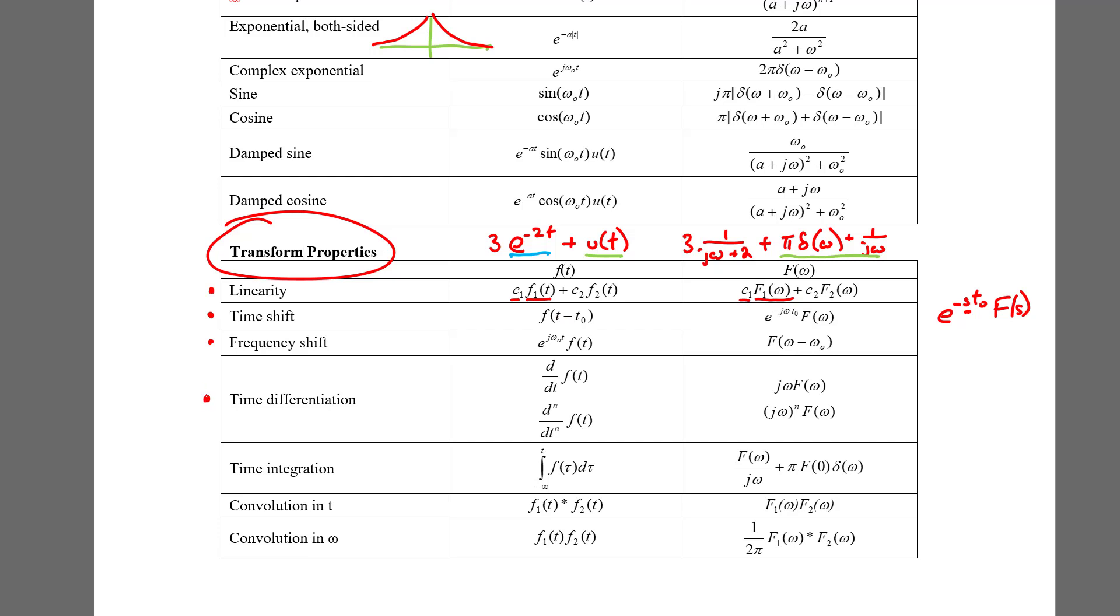Time differentiation is something that's encountered much more commonly in Fourier transforms than in Laplace transforms. And it says that the derivative, the time derivative of a function, has as its transform, same transform as if it wasn't the derivative, but just multiplied by j omega. In other words, multiplying by j omega is like taking a derivative, just like in the Laplace transform, multiplying by s was like taking a derivative.